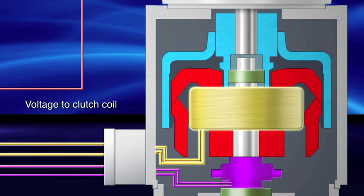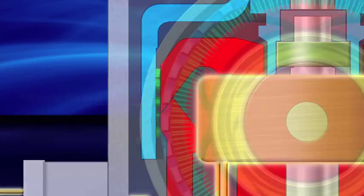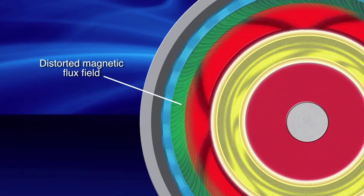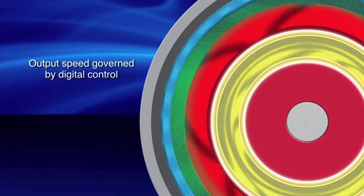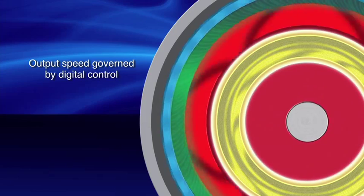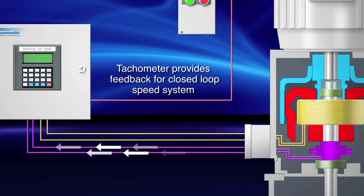By regulating voltage to the clutch coil, a magnetic flux field is created, and distortion of the flux field creates torque. The greater the power to the coil, the greater the strength of the magnetic flux field, and the greater the output torque. A tachometer provides output feedback to the digital controller, making Dynamatic a closed-loop system.